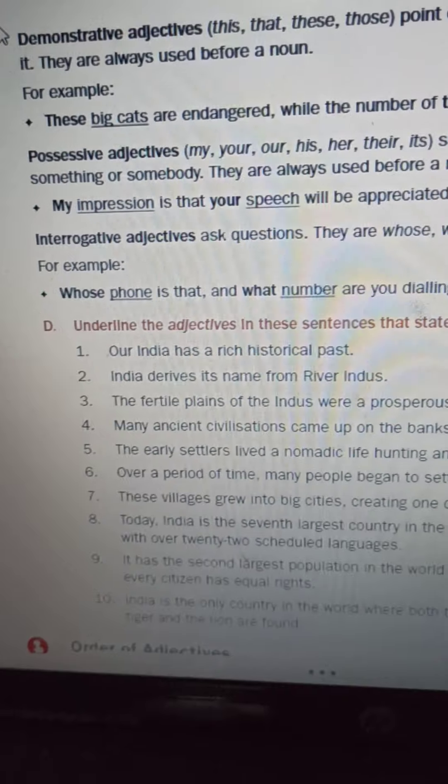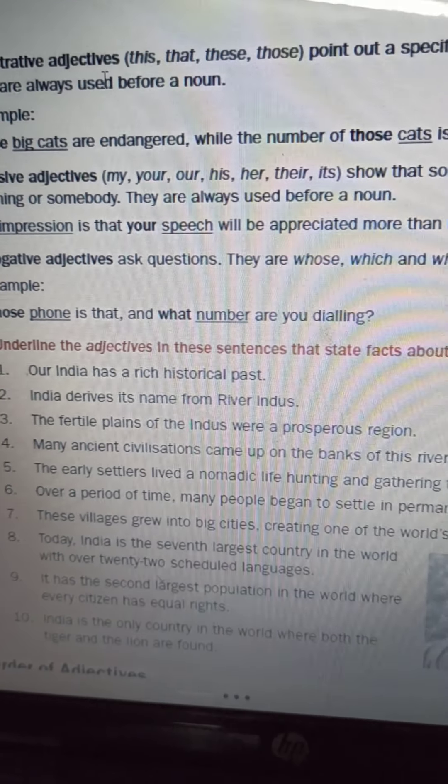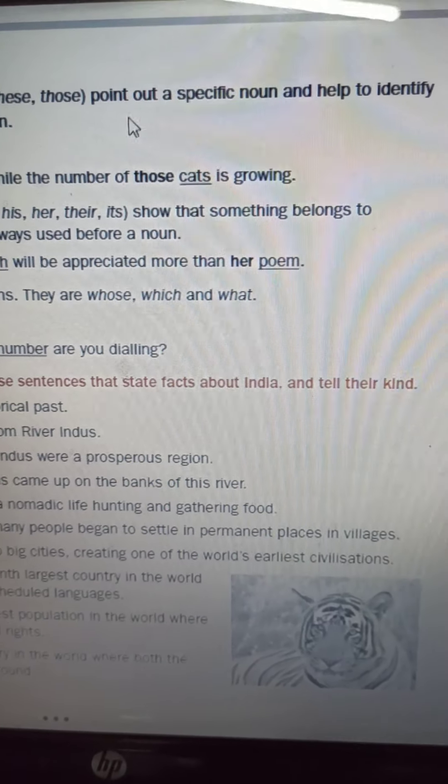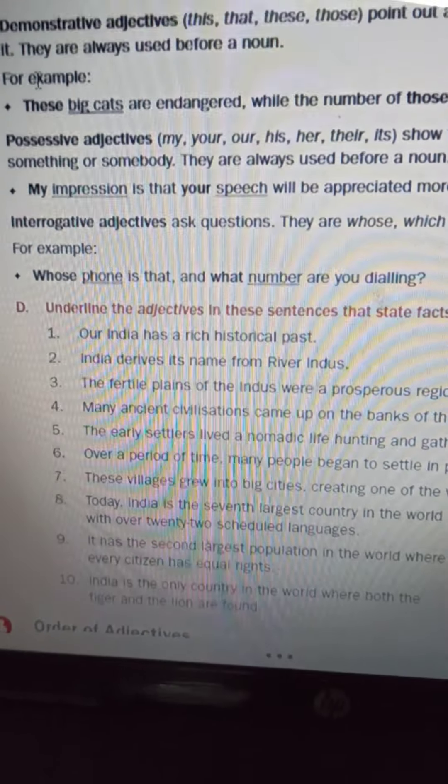This is the next page. Then we have children, the demonstrative adjective. As I told you, this, that, these and those - they point out a specific noun, help to identify it.